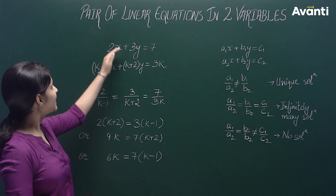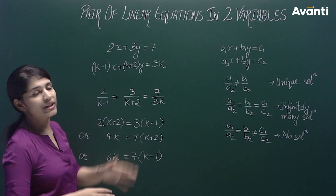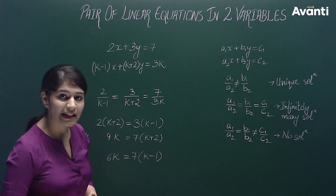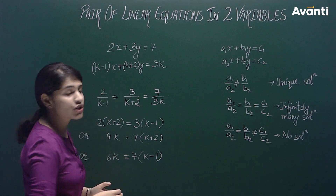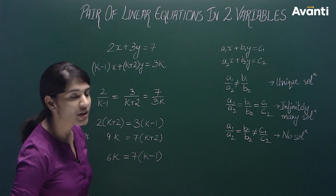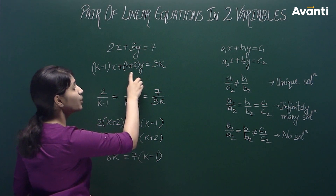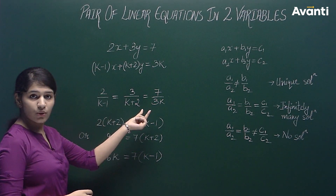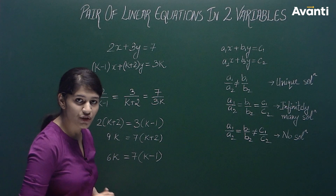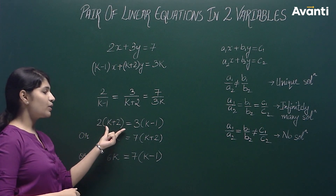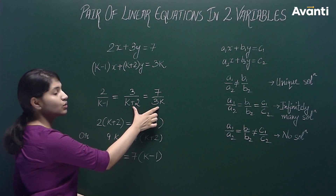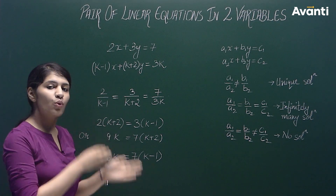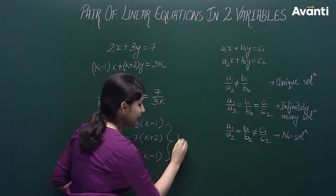For the given question, we have been given two equations. We need to find the value of k such that 2/(k-1) equals 3/(k-2) equals 7. Solving this, we get the condition on k for the pair of equations to have a consistent solution.